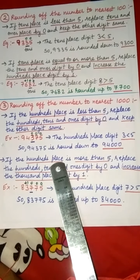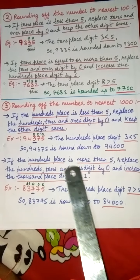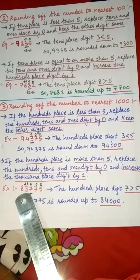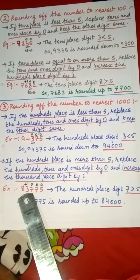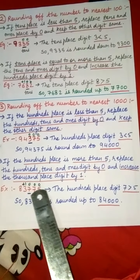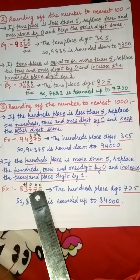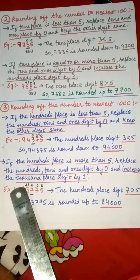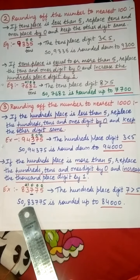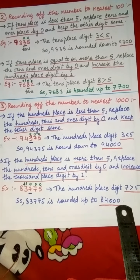Rule 2: if the hundreds place digit is equal to or more than 5, replace the hundreds, tens, and ones digits by 0 and increase the thousands digit by 1. For example, 83,775. The hundreds place digit is 7, which is greater than 5. So we replace ones, tens, and hundreds with 0 and add 1 to the thousands digit: 3 becomes 4. So 83,775 is rounded up to 84,000.